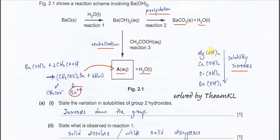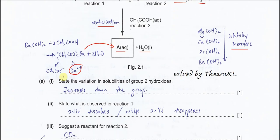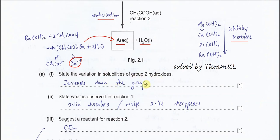For magnesium hydroxide, it is partially soluble, so the concentration of hydroxide is lower. Barium hydroxide has the highest solubility among the Group 2 hydroxides — it almost fully dissolves to form an aqueous solution, and the concentration of hydroxide is highest. So for Part A1, the variation in solubilities of Group 2 hydroxides increases down the group. You have to memorize this.